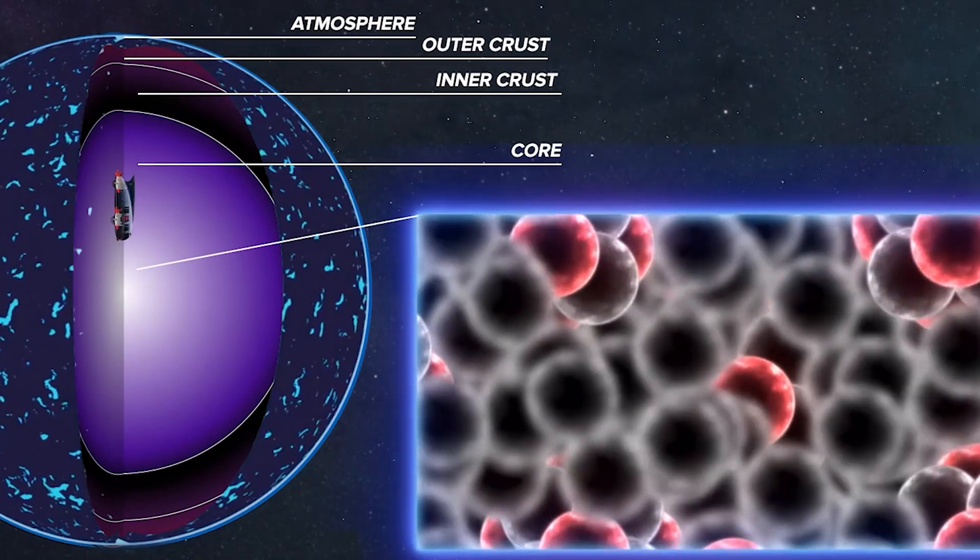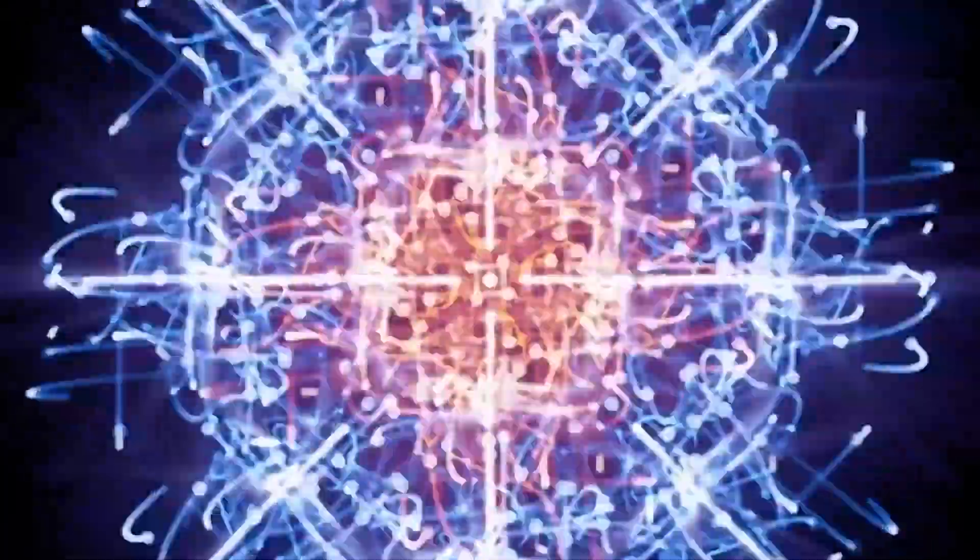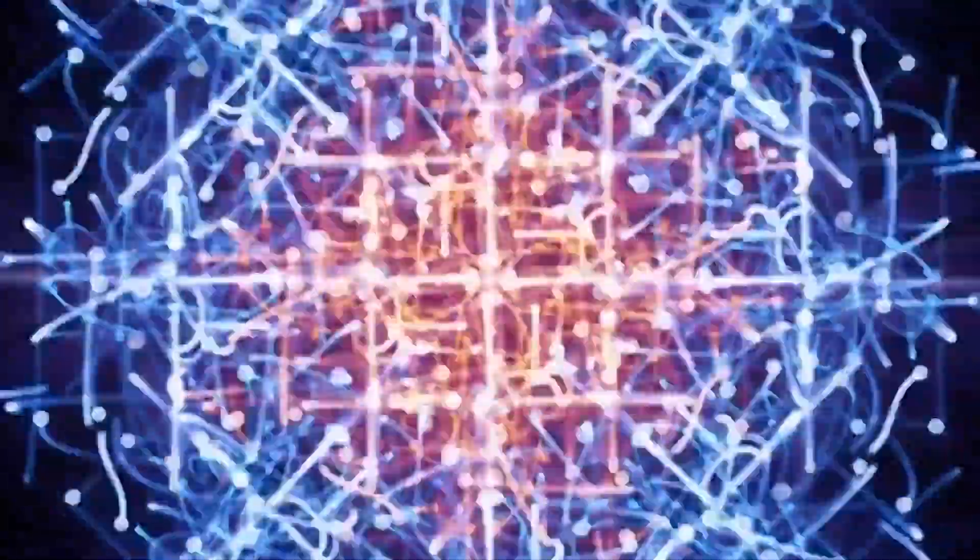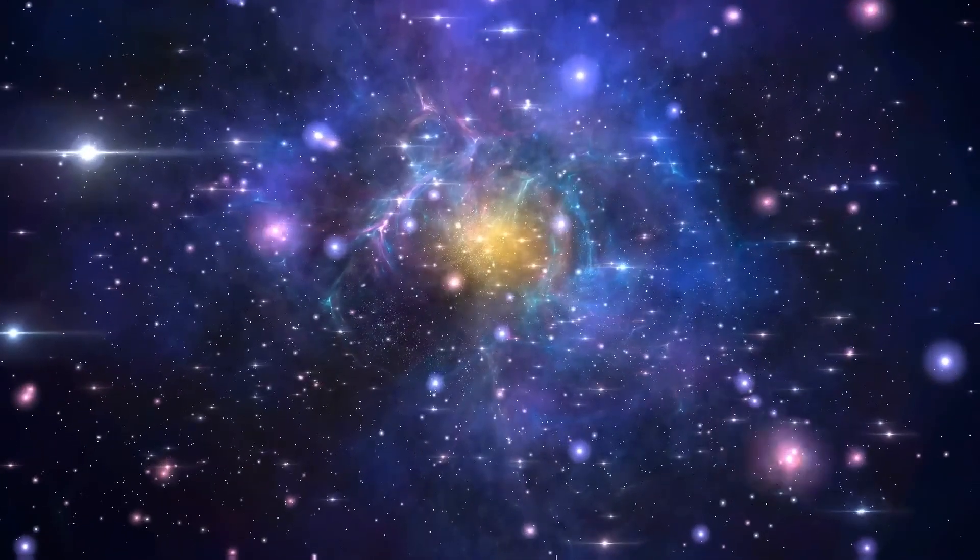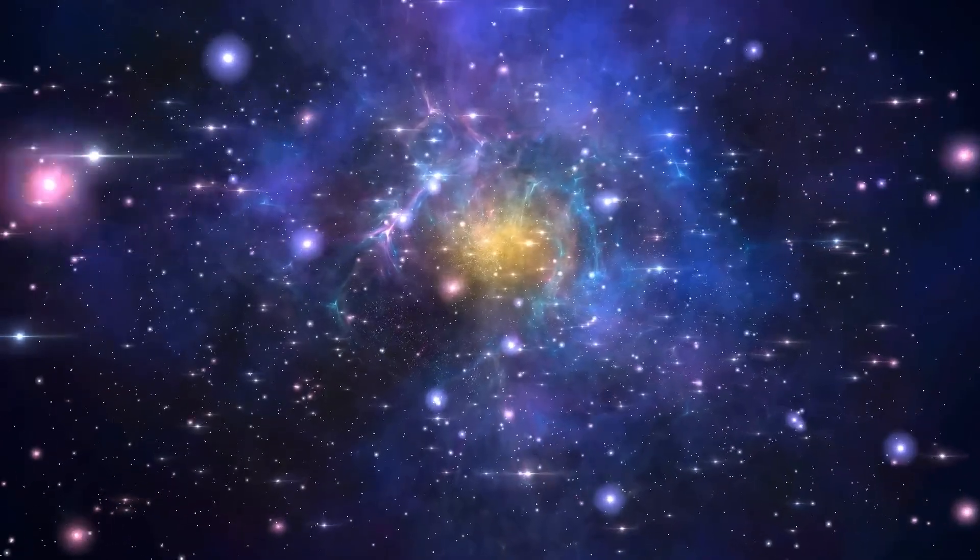The outer crust, composed mainly of nearly pure neutrons, is rigid and bears functional similarities to a large atomic nucleus, with gravity, rather than nuclear force holding the neutron star together.